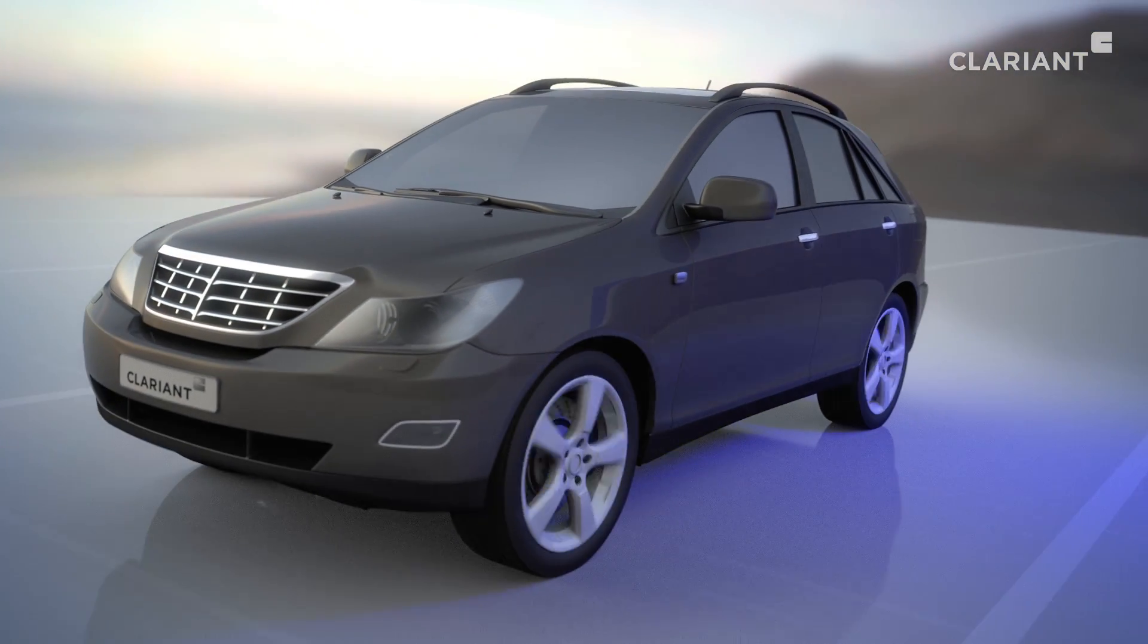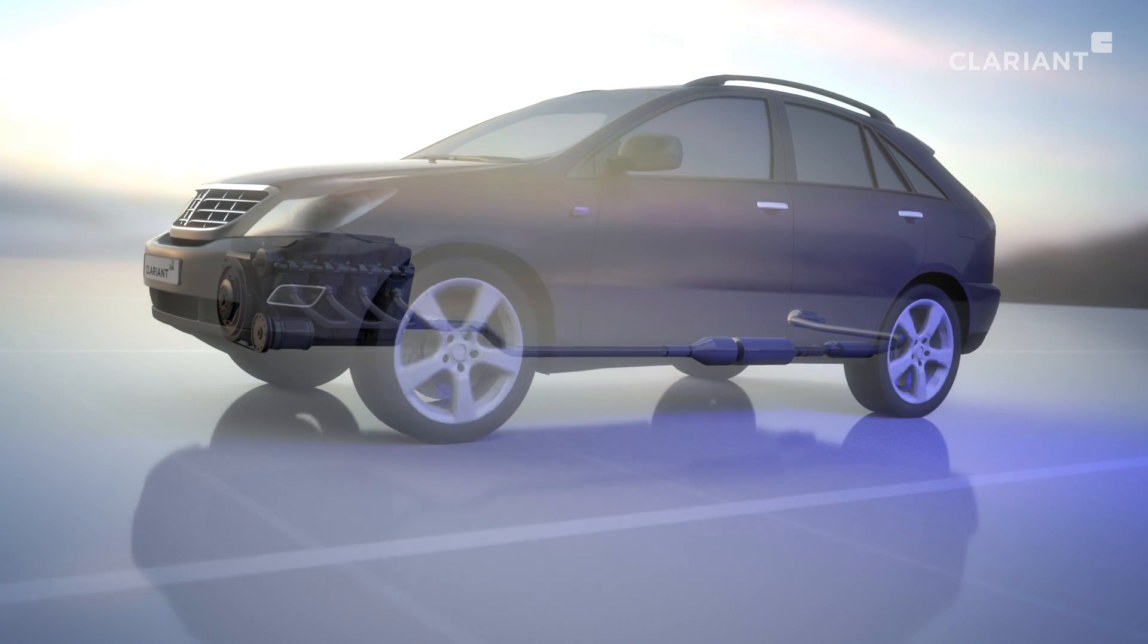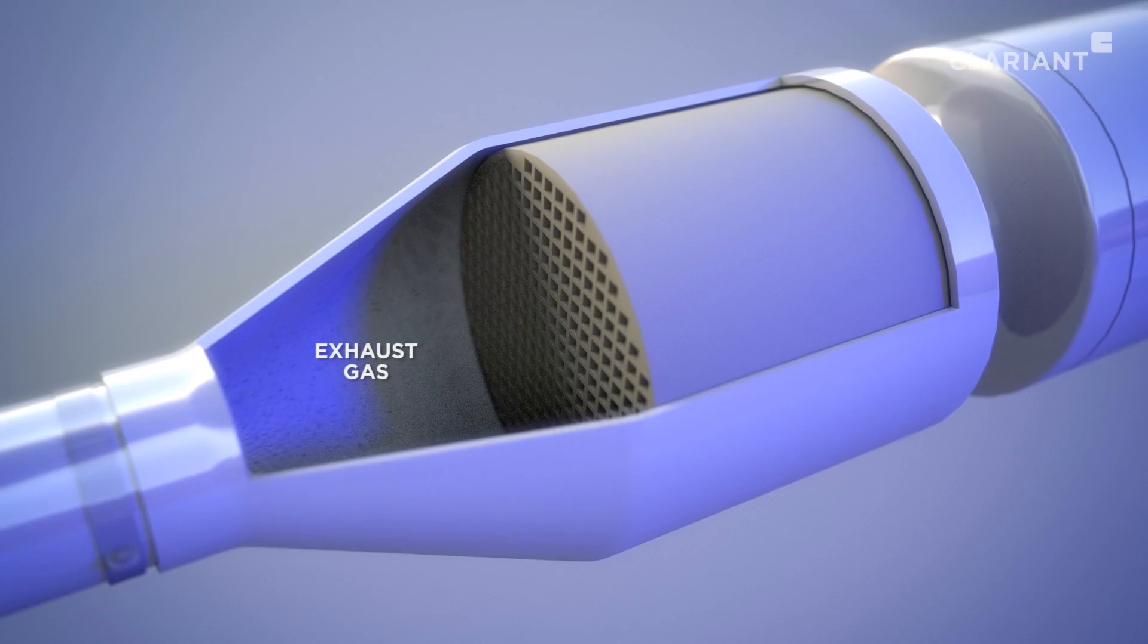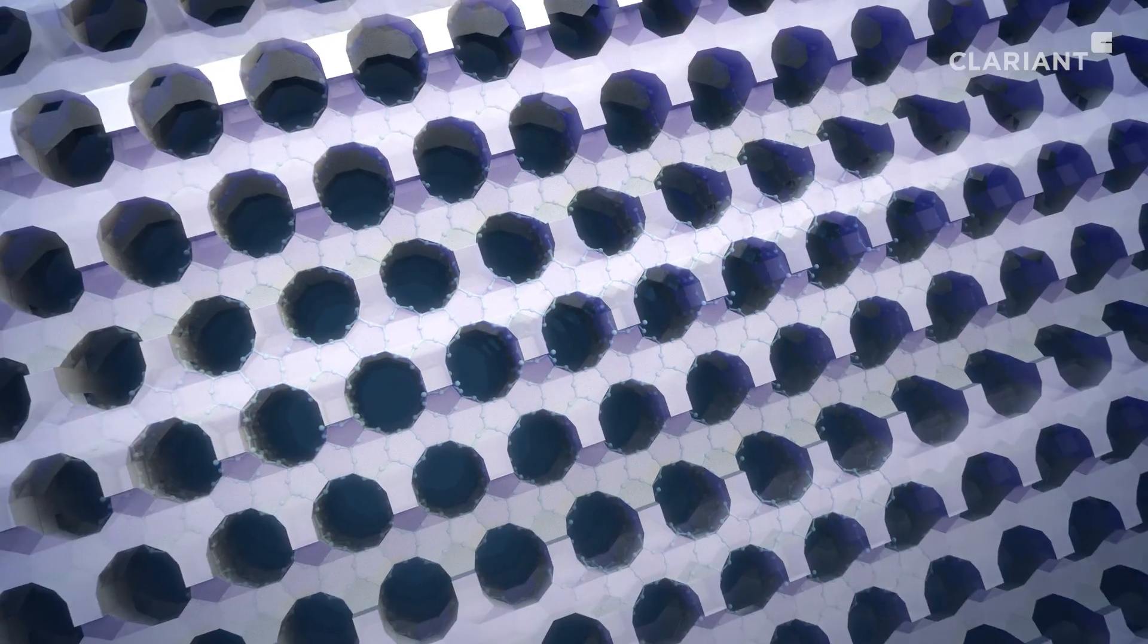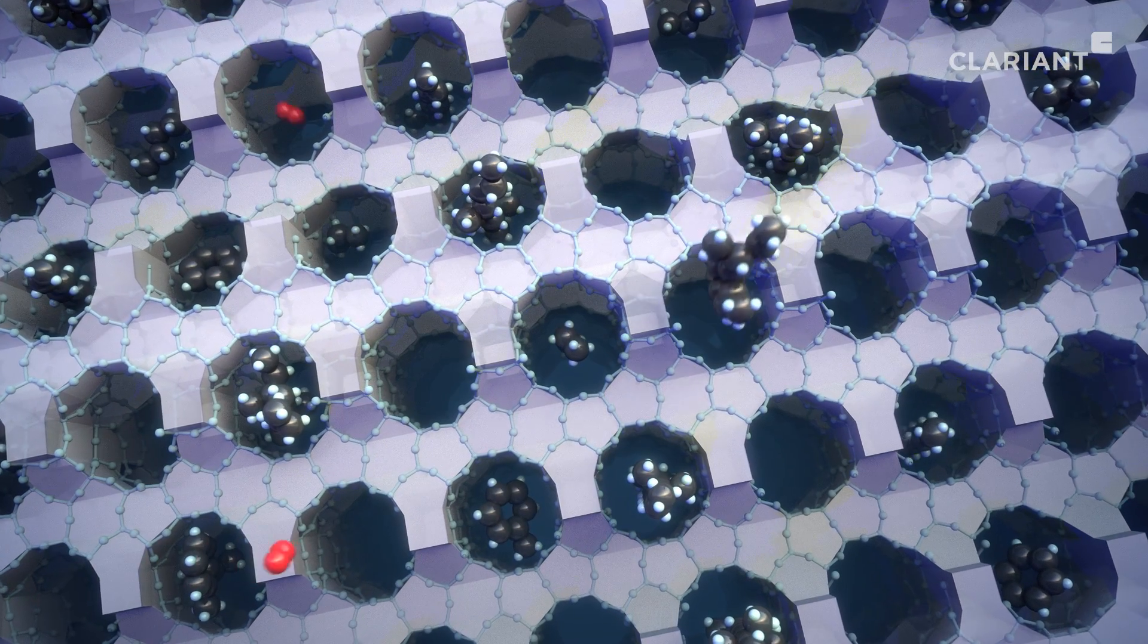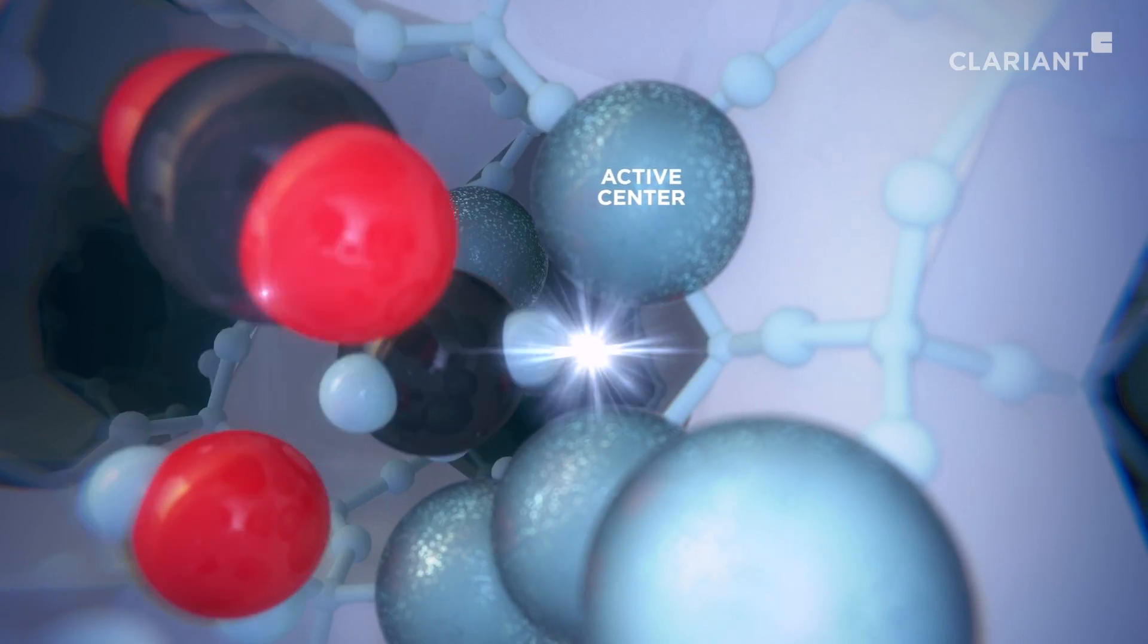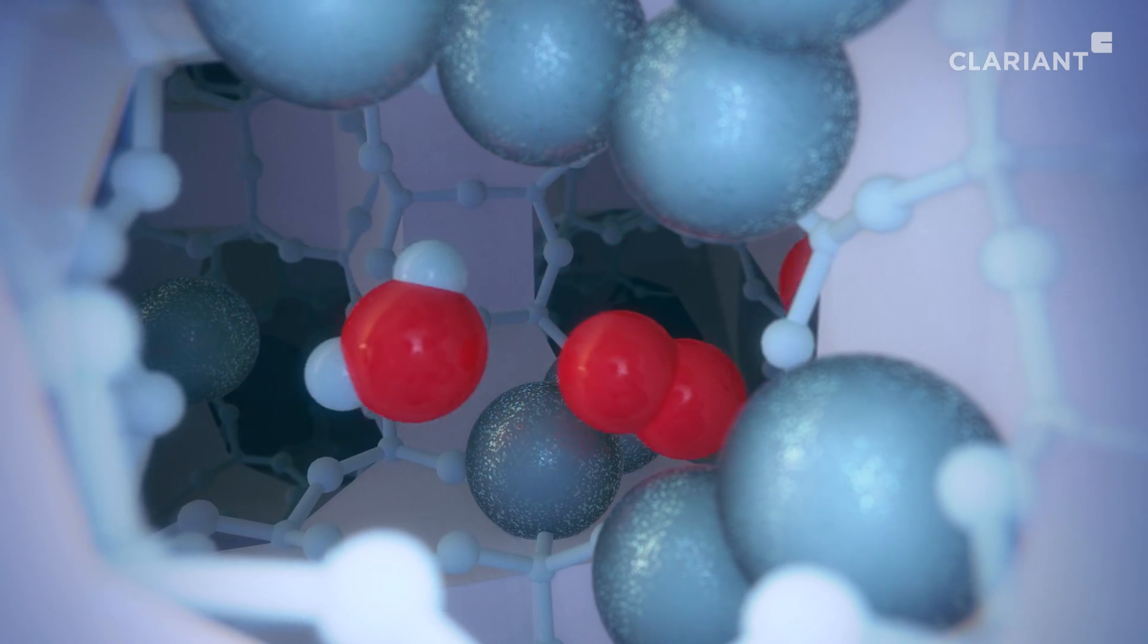A representative and characteristic zeolite beta application is hydrocarbon storage after the cold start of a car engine. At low temperatures, no catalytic decomposition of the hydrocarbons is possible. However, the zeolite beta, with its high capacity of capillary structures, provides intermediate storage for the hydrocarbons until the temperature of the exhaust gas flow is high enough to convert them to carbon dioxide and water in the presence of atmospheric oxygen.